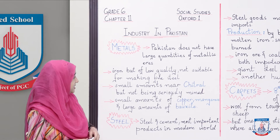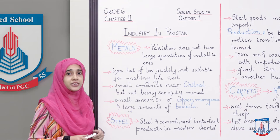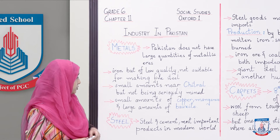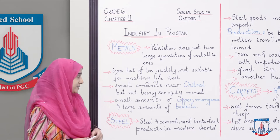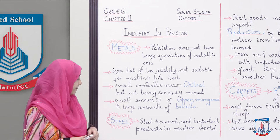Small amounts of good quality iron ore have been found near Chitral but its mining process has not properly started yet. Iske ilawa small amounts of copper, manganese, aur bauxite bhi mili hain. Ab baat karte hain steel ki.